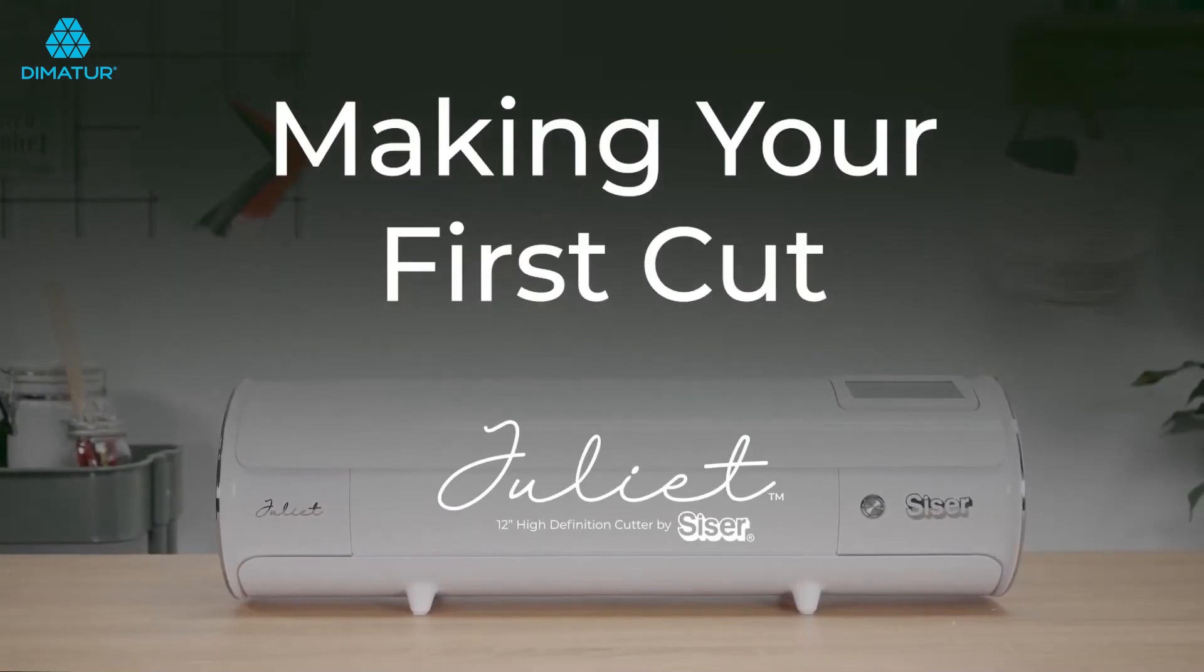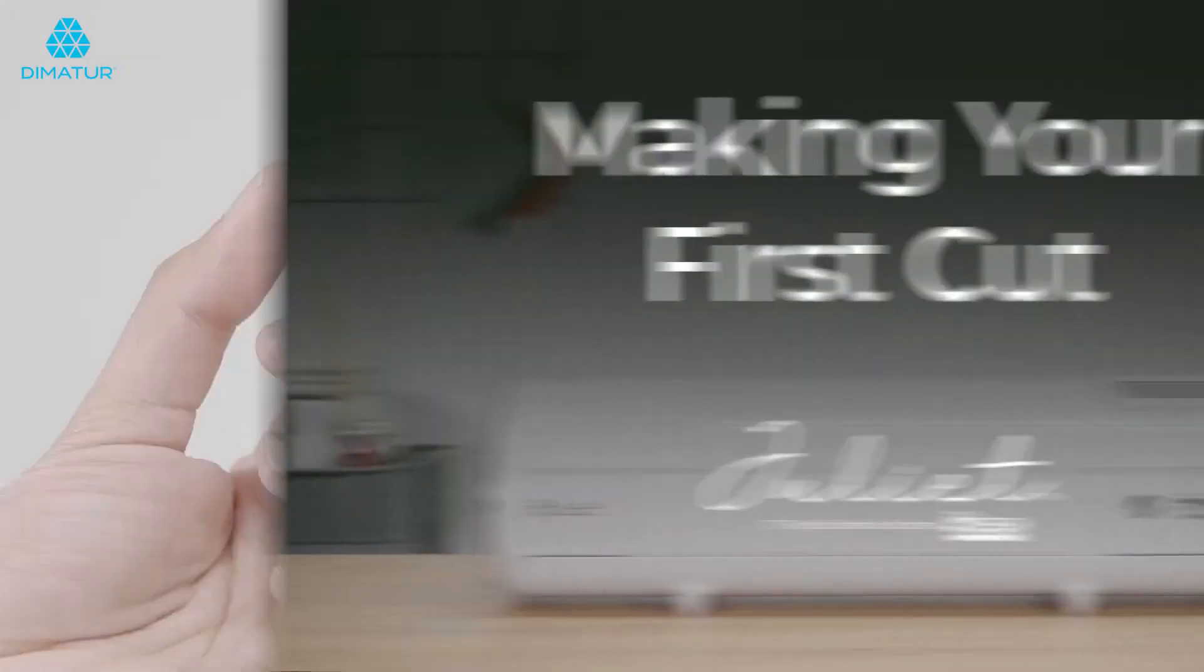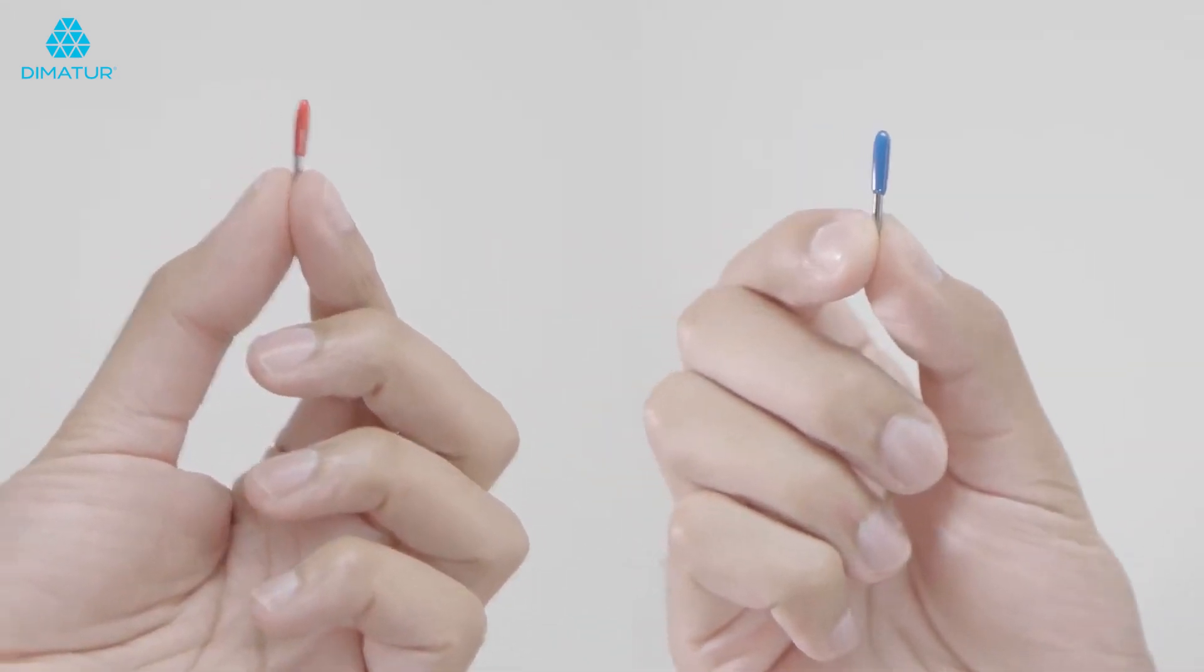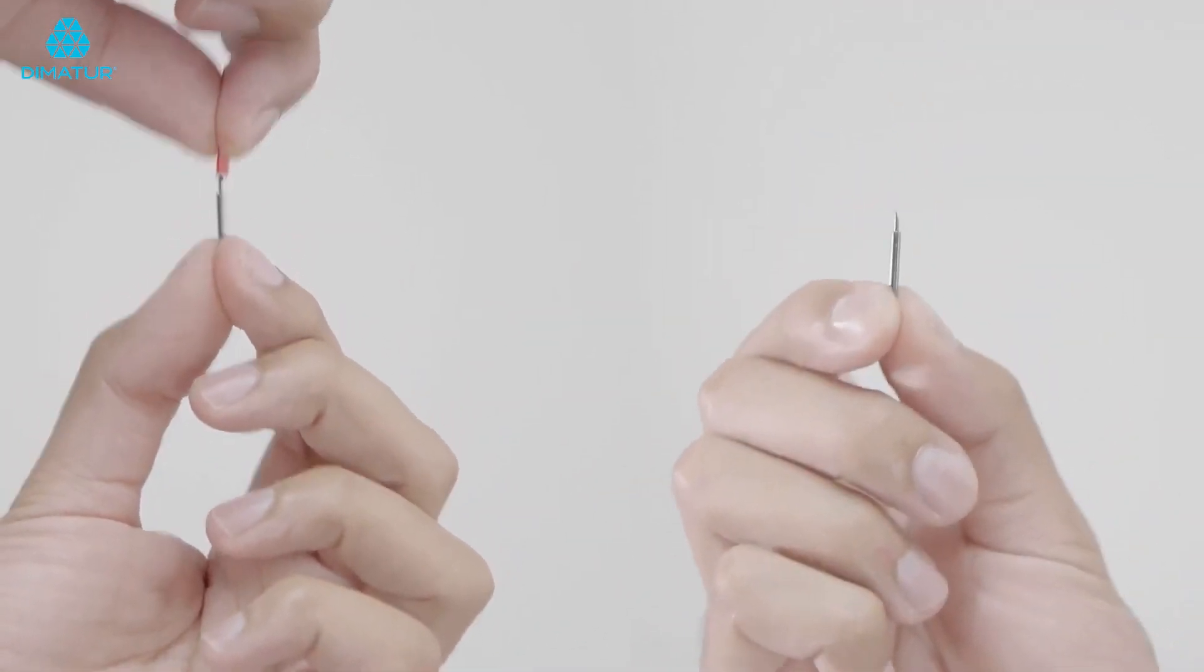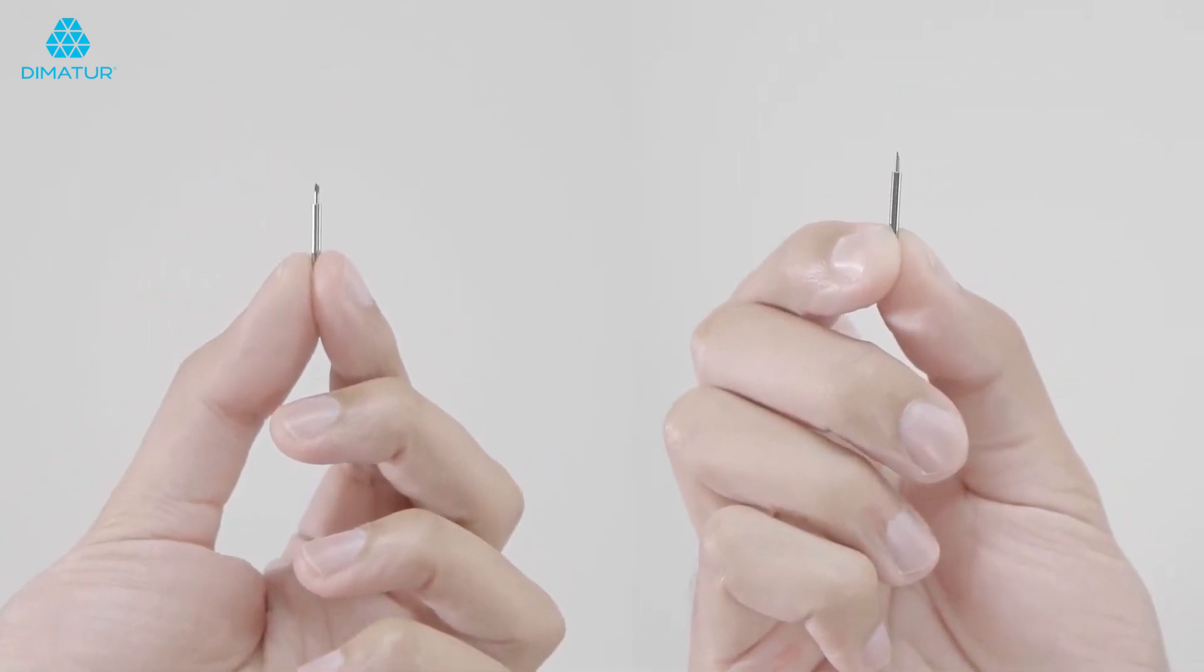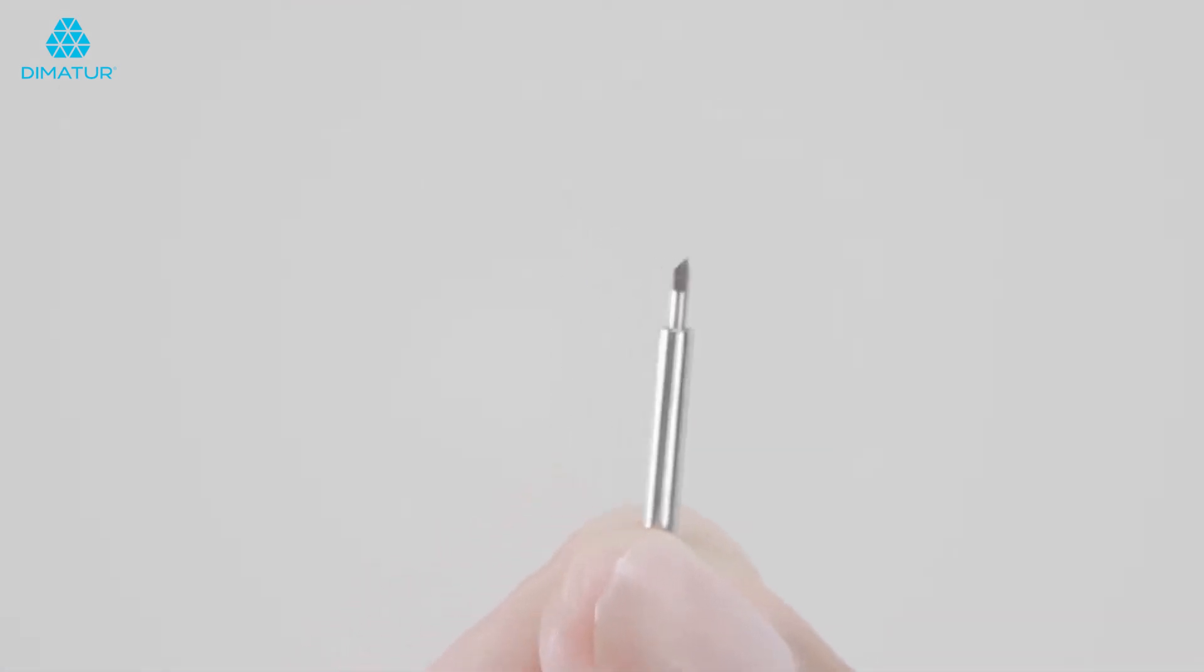When making your first cut with the Juliette High Definition Cutter by Caesar, it is important to decide what blade best fits your project. Each Juliette comes with two 45-degree angle blades for standard materials and minor details.